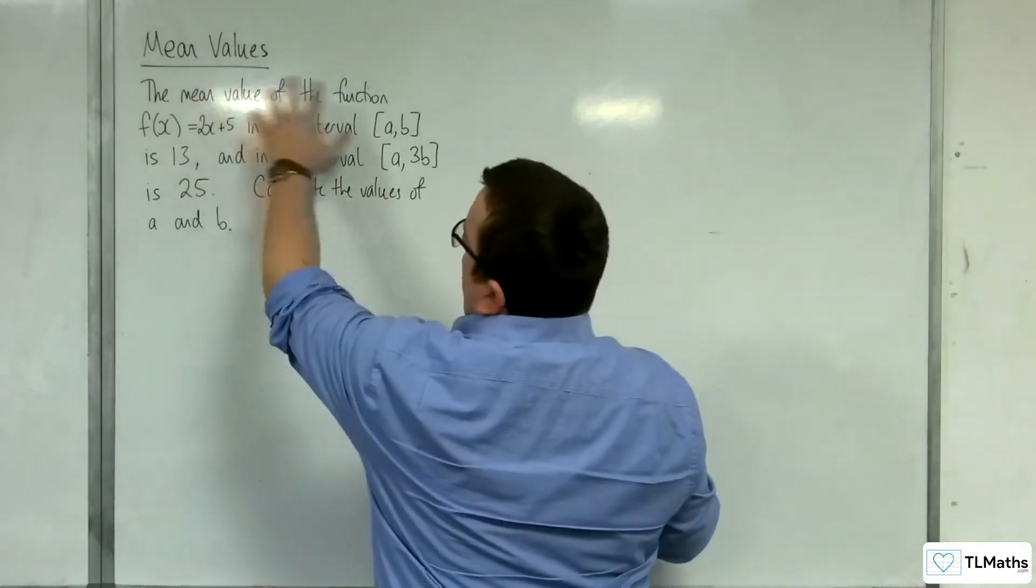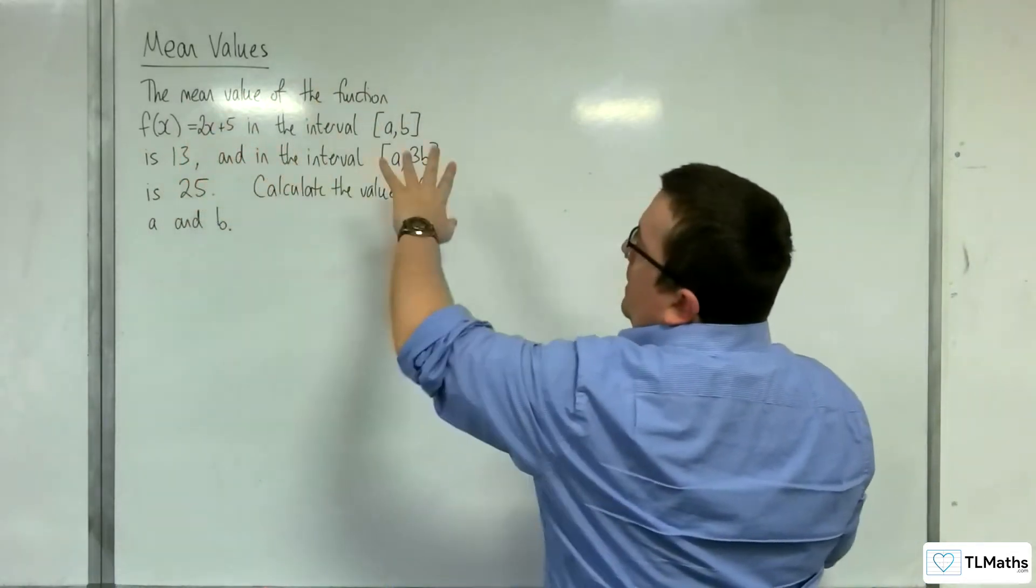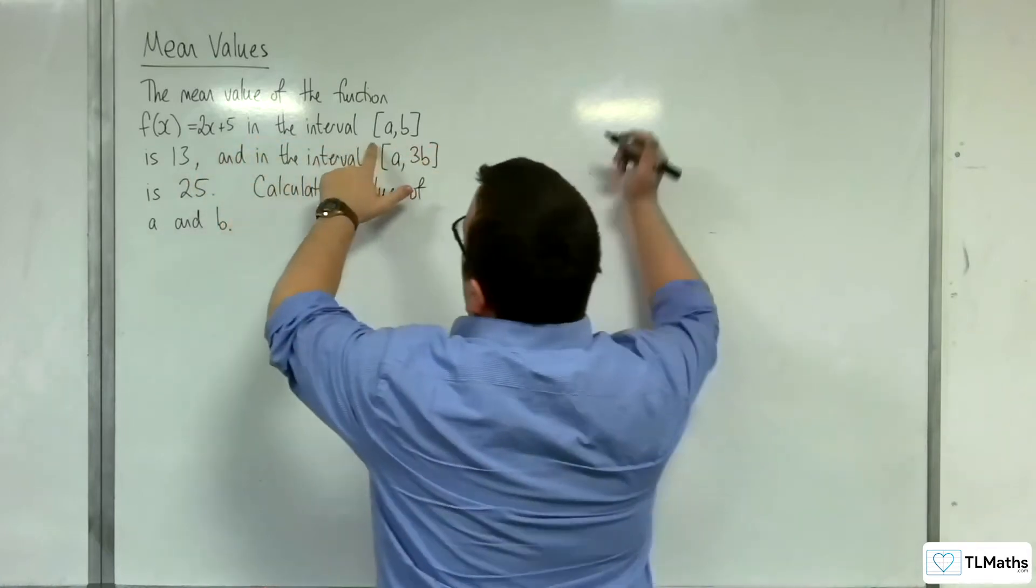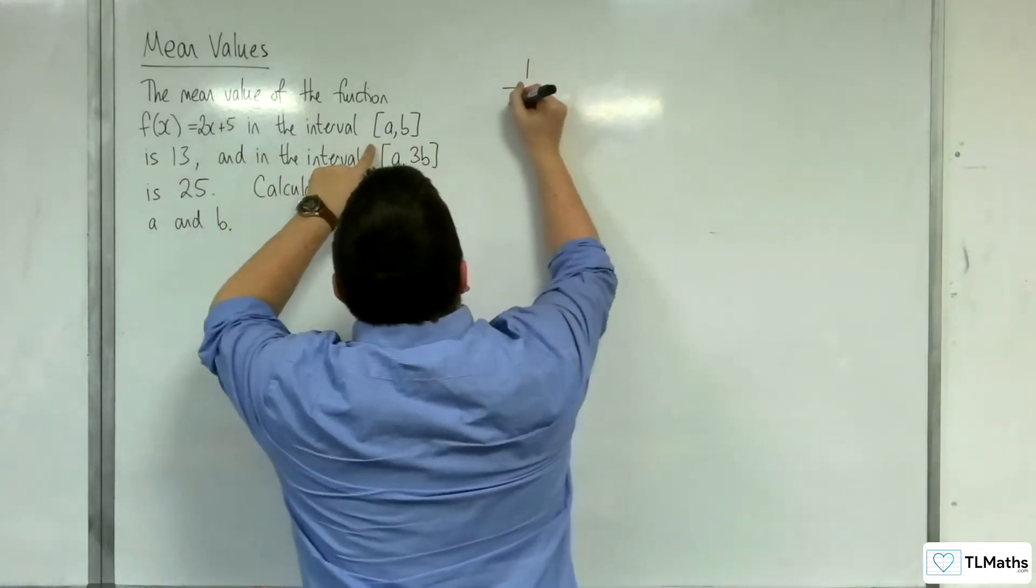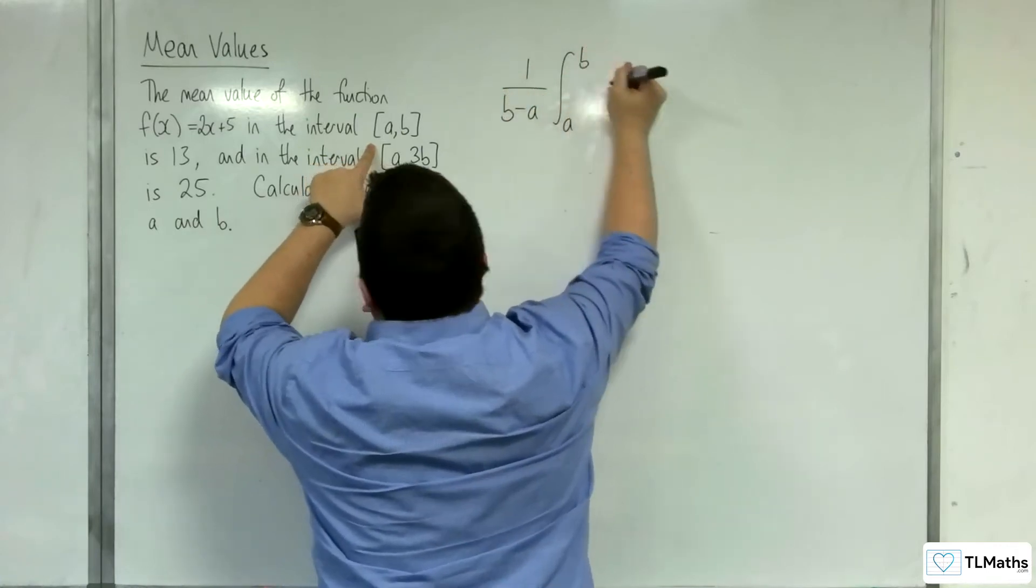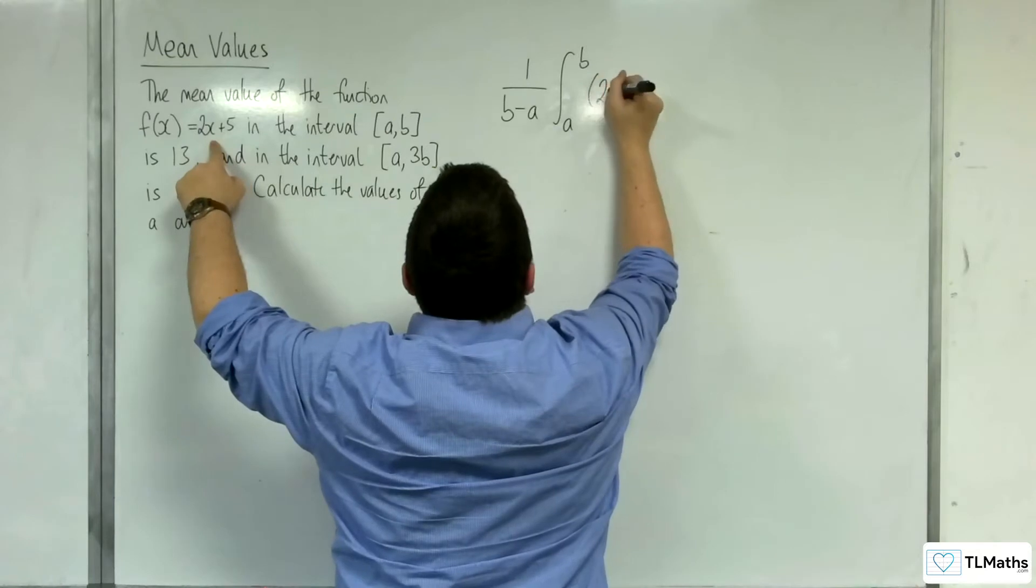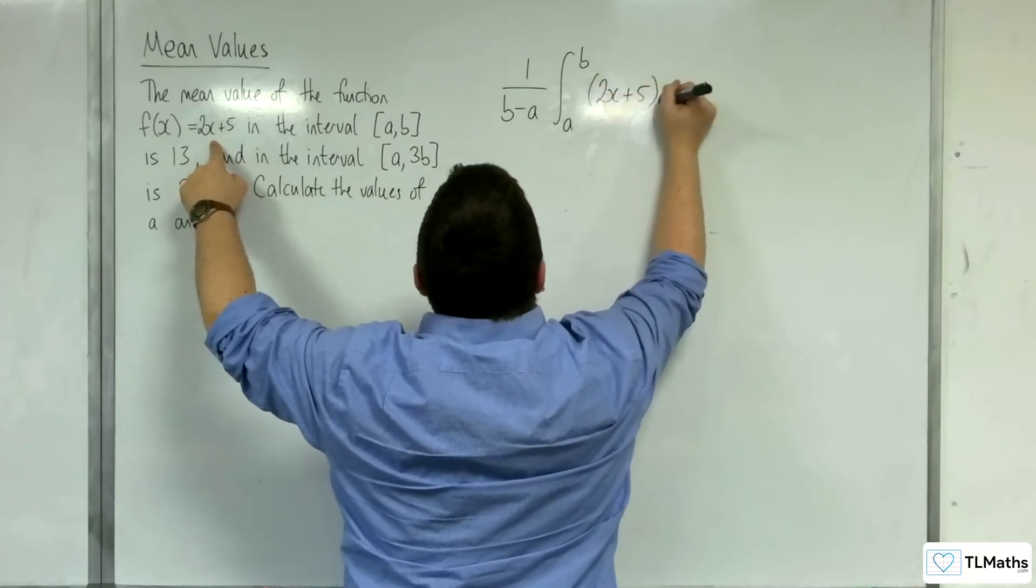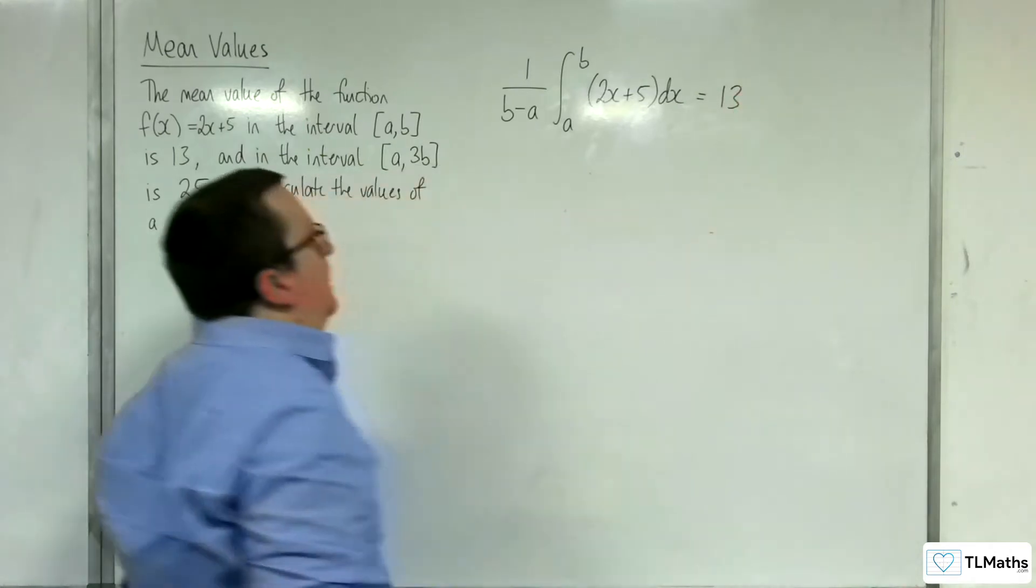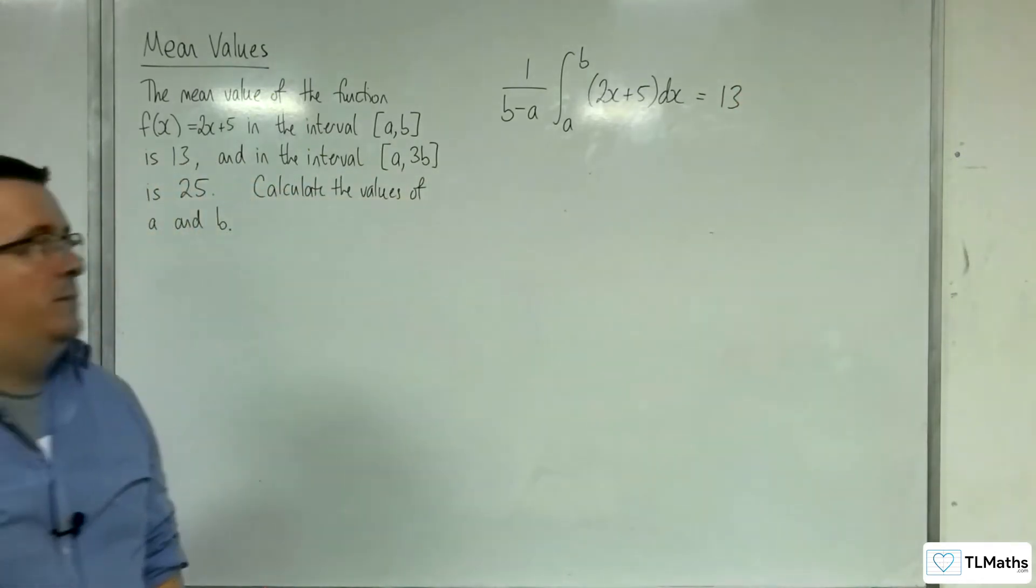So the first bit, let's go with the first bit of information. The mean value of the function f(x) = 2x + 5 in the interval a to b is 13. So, 1 over (b - a) times the integral between a and b of 2x + 5 dx, that must be equal to 13. So the mean value is 13 between a and b.